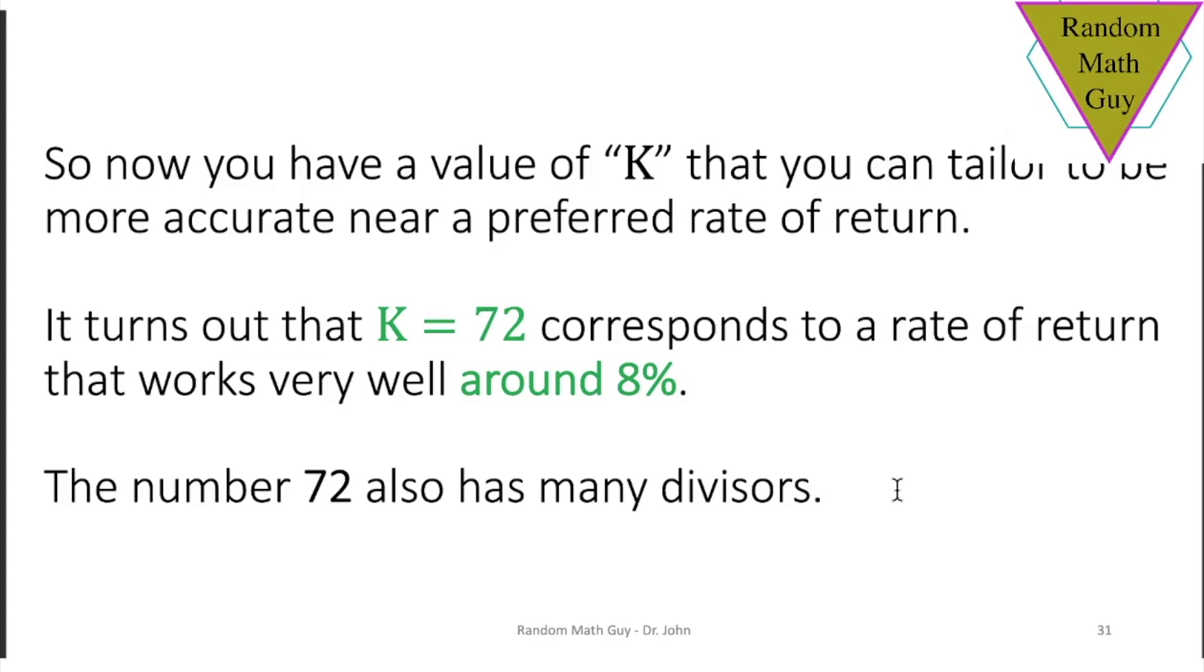So based on this information, you can tailor the K value to whatever preferred rate of return you like. So for example, 72, as I showed you earlier, is pretty close to a very accurate answer for 8%. So why choose 72 ultimately? It's good because 72 has lots of divisors, and that's why people use it in practice.